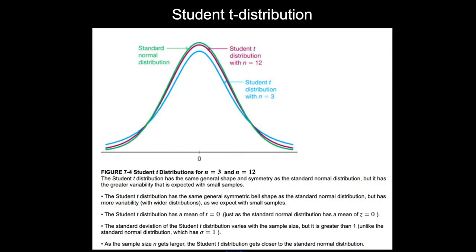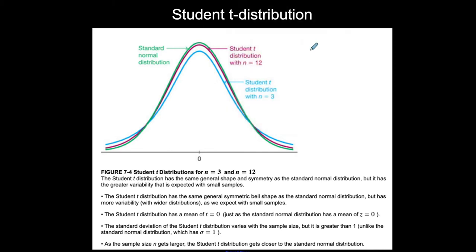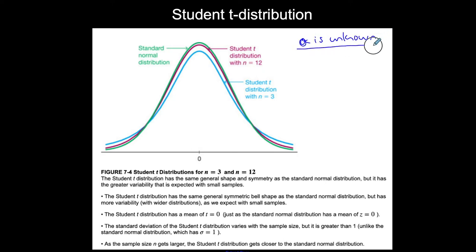This video introduces the Student t-distribution. We use the Student t-distribution when sigma — the population standard deviation — is unknown. Because there's one more variable that we don't know, we use this type of distribution.